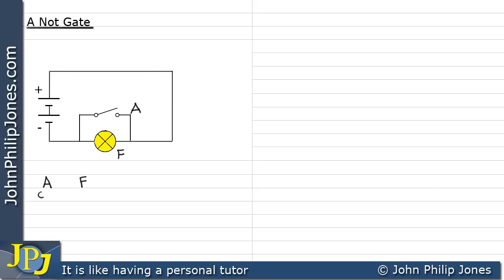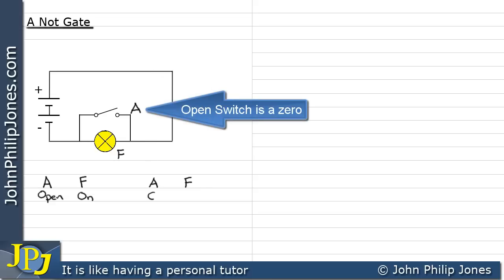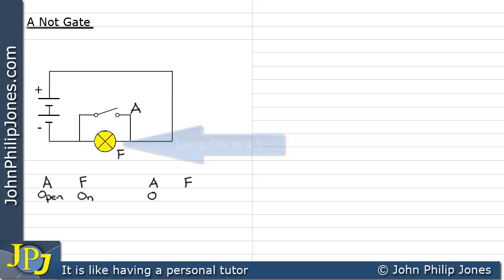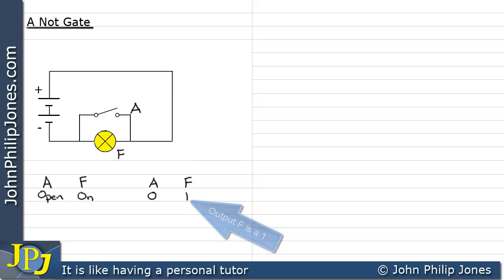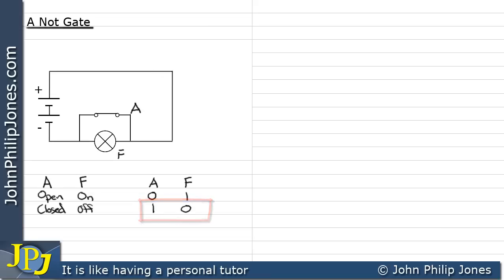When A is open, the output F — the lamp — is switched on. Let's define an open switch as a 0 and a lamp that is on as a 1. So when the switch is open, A equals 0 and F equals 1. When input A is closed, output F is off. We represent that as A being 1 when the switch is closed, and F being 0 when the lamp is off.